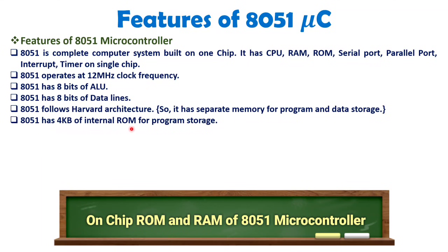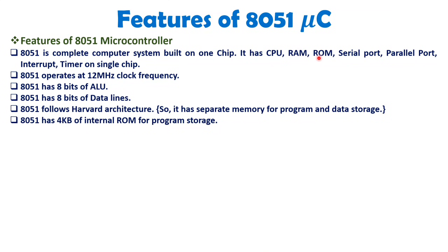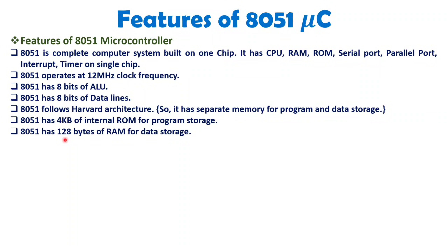On-chip, the 8051 has 4 KB of internal ROM. For more complex applications, you can interface up to 64 KB of external ROM. For small-scale applications, the internal ROM size is sufficient. The 8051 also has on-chip RAM of 128 bytes. For complex applications, up to 64 KB of external RAM can be interfaced. For smaller applications, the available on-chip RAM and ROM mean you don't need to interface external memory at all.